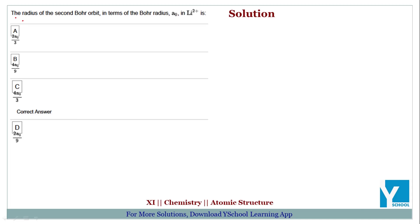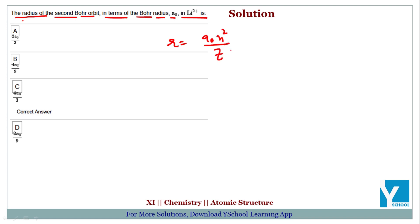The question asks for the radius of the second Bohr orbit in terms of Bohr radius a₀ in lithium plus 2. The radius value we have is: r = a₀ · n²/z.